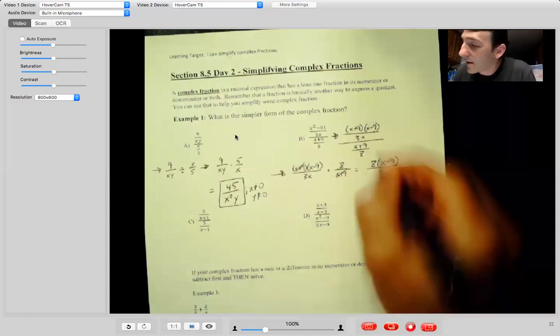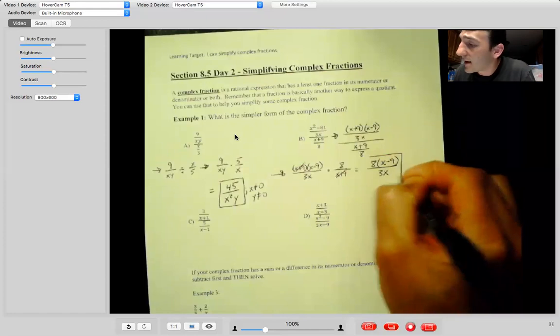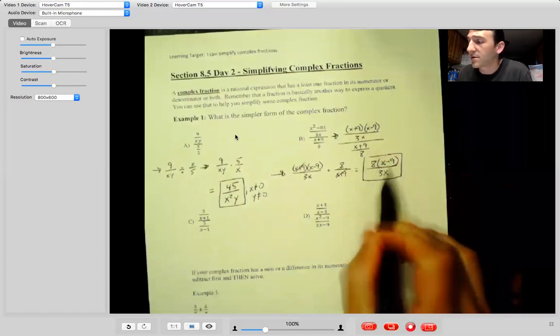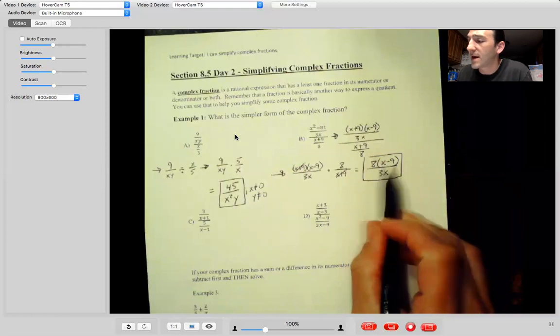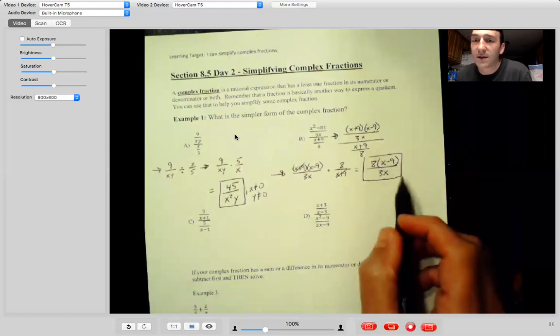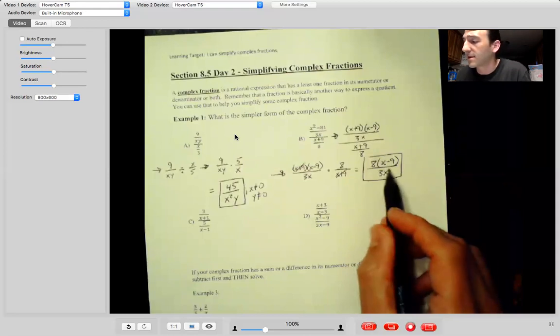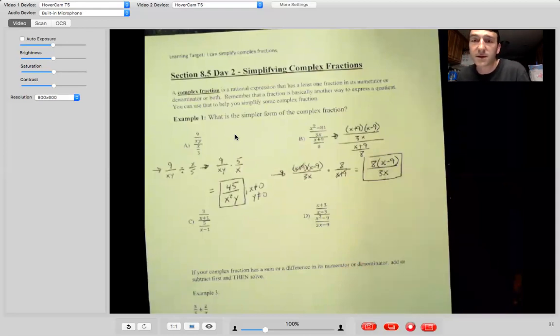If they don't accept this answer, then you would just need to distribute the eight to get eight X minus 72 over three X. And then the restriction would just be X can't be zero, but I think on MathXL you just have to go this far. So I'm going to leave it there.